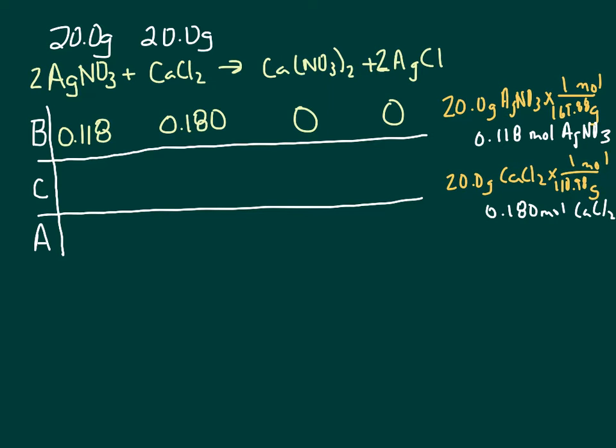So the one I want to try out is this one. Let's say that the calcium chloride was the limiting reactant. The limiting reactant means the one that is going to run out. So if I put minus 0.180, that means I used it all up.